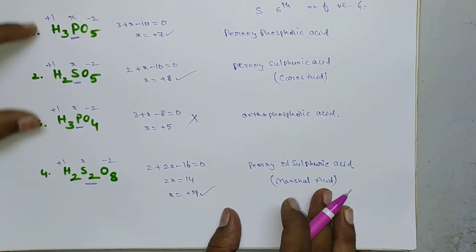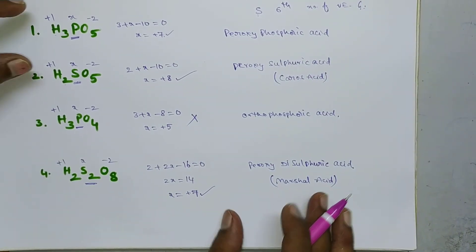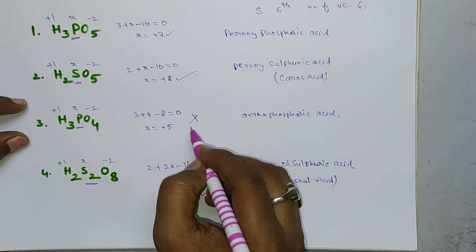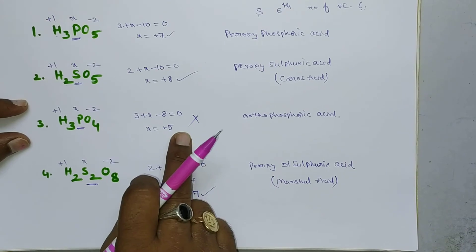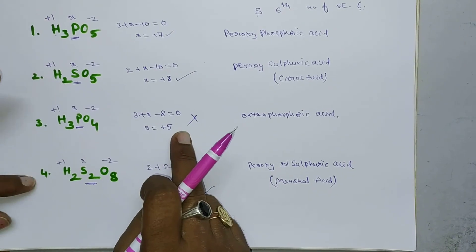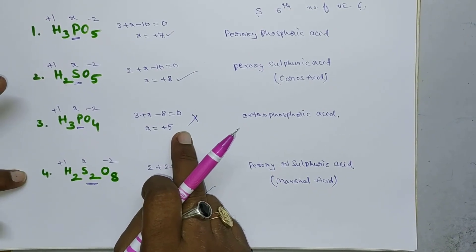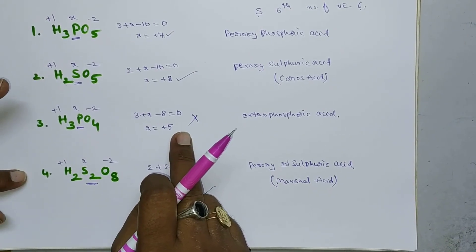So among these compounds, H₃PO₄ is not a peroxy acid; the remaining compounds are all peroxy acids.